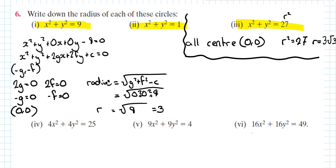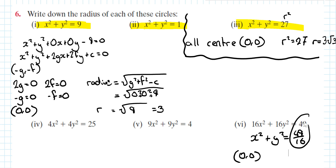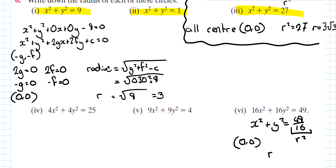To handle a form like 16x² + 16y² = 49, divide everything by 16 to get x² + y² = 49/16. The centre is (0, 0) and r² = 49/16, so r = 7/4. And that's all there is to it.